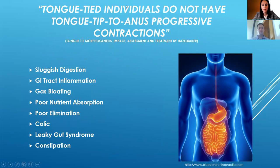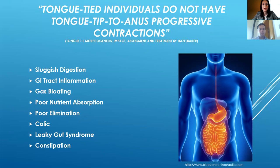From the book Tongue-Tied: Morphogenesis, Impact, Assessment and Treatment by Allison Hazel Baker, tongue-tied individuals do not have tongue-tipped to anus progressive contractions. As a result, you can see sluggish digestion, GI tract inflammation, gas and bloating, poor nutrient absorption, poor elimination, colic, leaky gut syndrome, and even constipation. Digestion begins at the tip of the tongue — if that tip is restricted, the person cannot properly form a bolus with food to swallow it correctly, and they may also end up swallowing air, leading to aerophagia.